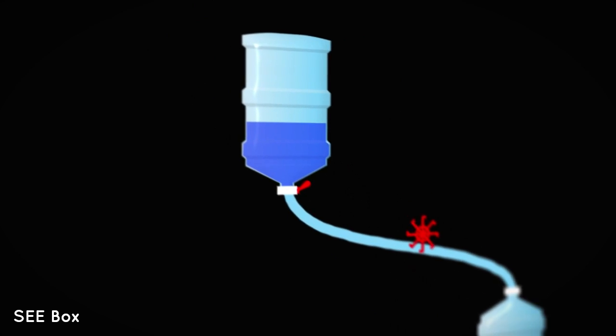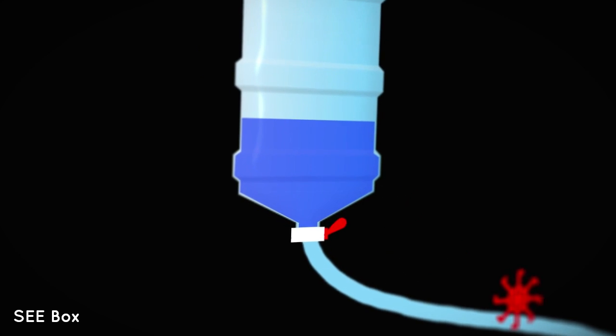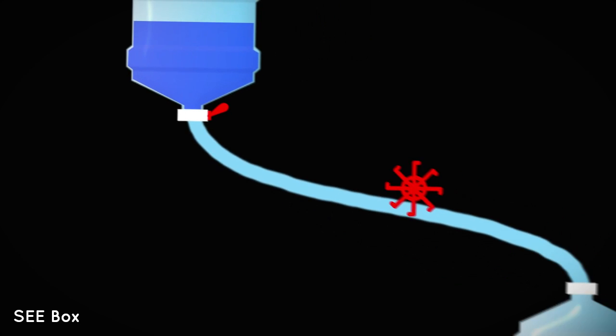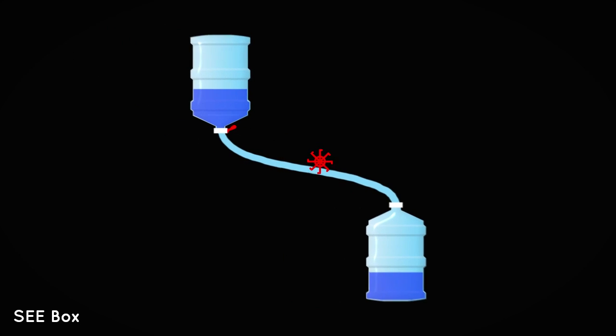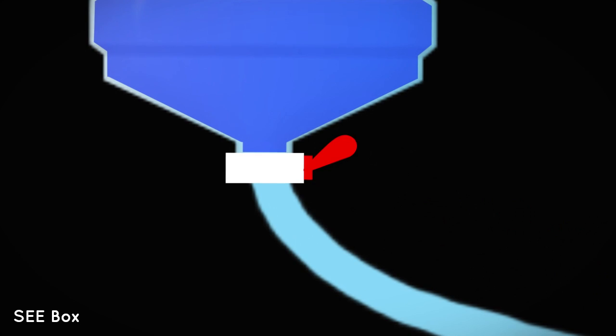By now I'm sure you're wondering what all of this water business has to do with voltage. Well, the water molecules in tank 1 have a higher potential to do work than those in tank 2. Even when there is no water flowing between the tanks and thus no work being performed, it is this potential difference that can be utilized to do some work.